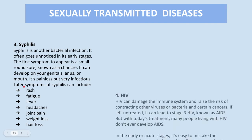Fourth, we have HIV. HIV can damage the immune system and raise the risk of contracting other viruses, bacteria, and certain cancers. If left untreated, it can lead to stage 3 HIV, known as AIDS. But with today's treatment, many people living with HIV don't ever develop AIDS.